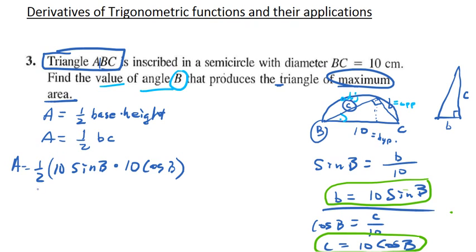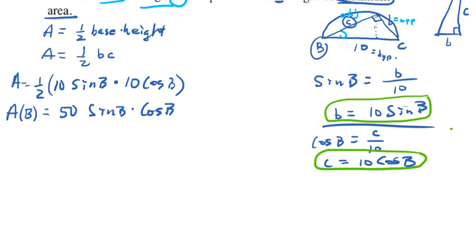So if we simplify this, the area actually now is a function of big B. One-half times 10 times 10 is 50, and then we have sine B times cosine B.